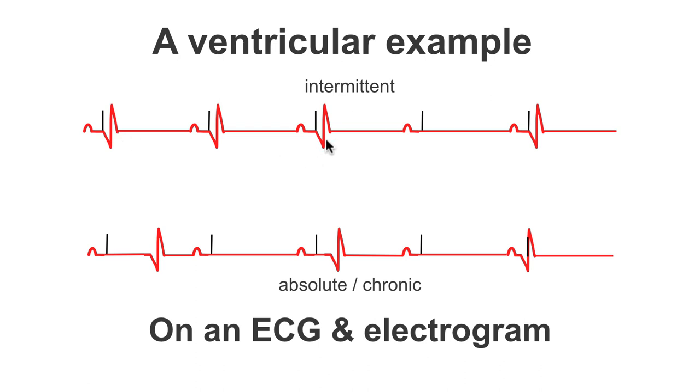However, if we look at a few heartbeats along the ECG, we can see that this output pulse has failed to trigger a ventricular depolarization. When some of the output pulses are successful, but some aren't successful, this is intermittent. You can also have permanent, or absolute, or chronic failure to capture.